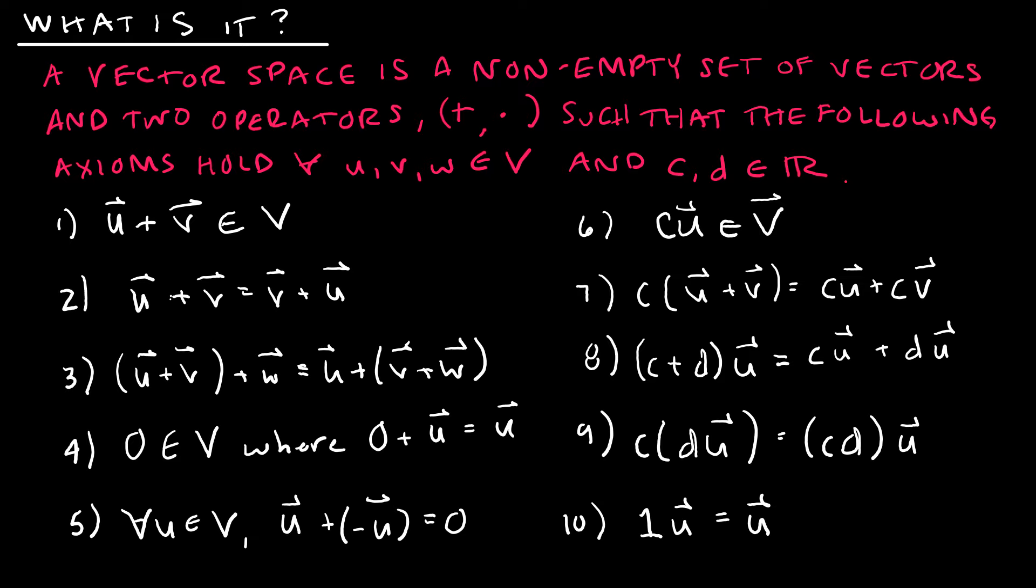So, what is a vector space? It is a non-empty set of vectors and two operators, addition and multiplication, such that the following axioms hold for all vectors u, v, and w that belong to the set of vectors. And for c, d, which are scalars that belong to the set of real numbers.